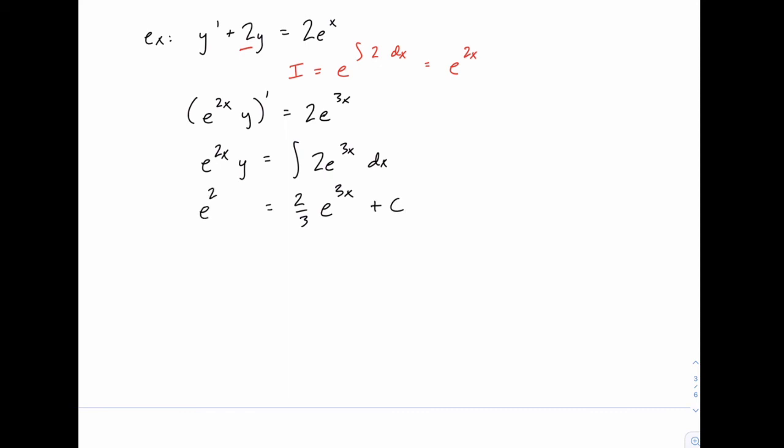And that equals e to the 2x times y. Again to solve for y, we're going to divide by e to the 2x. On the first term, e to the 3x divided by e to the 2x, we're just going to subtract those exponents. So we'll get e to the 1x.